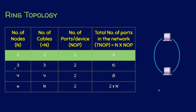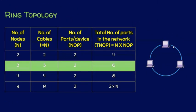Now we will see a ring topology that involves three nodes. If three nodes are involved, then obviously three cables are required. Each node must have two ports, so the number of ports per device equals two. Therefore, two into three equals six — a total of six ports are in the network.